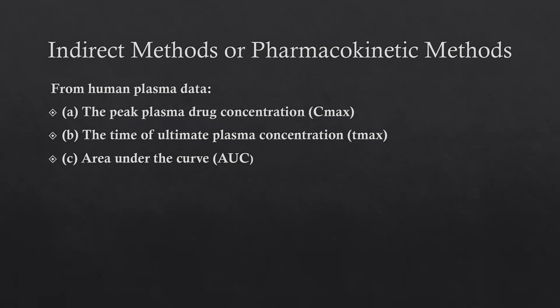In the indirect method, which is also known as the pharmacokinetic method, bioavailability is assessed or measured from human plasma data, that is plasma concentration-time profiles. In this human plasma data, it is divided into three points.